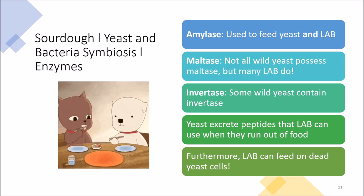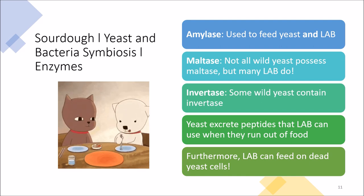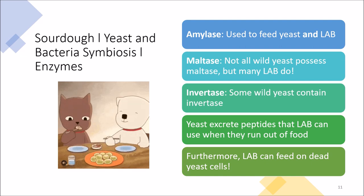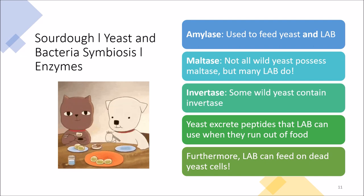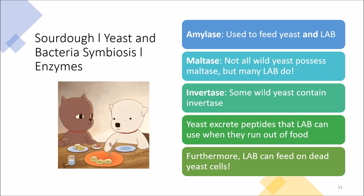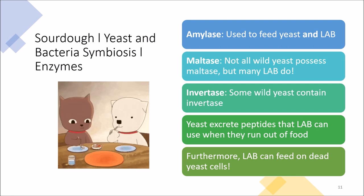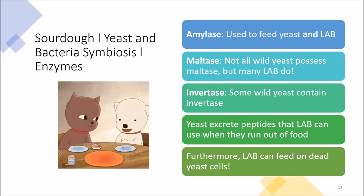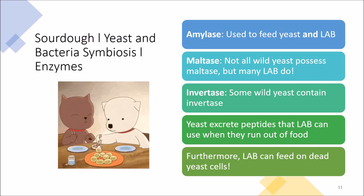Because wild yeast and bacteria possess different enzymes and can produce food sources for one another, there's a beneficial symbiotic relationship. Another interesting interaction: when yeast cells die — which is common in sourdough — the lactobacilli bacteria can actually feed on those dead yeast cells, turning the yeast into a food source. This isn't necessarily bad because, for the living yeast, if the lactobacilli have a food source, they can keep generating positive interactions. Overall, the yeast and bacteria help provide food for each other, but they also compete for food.